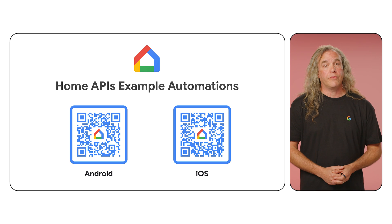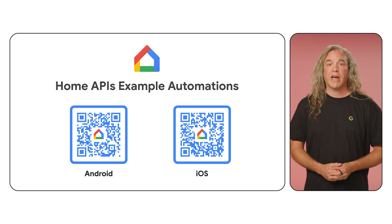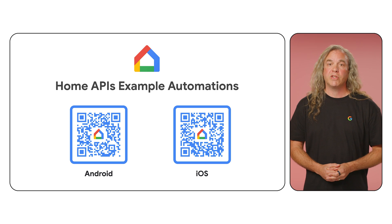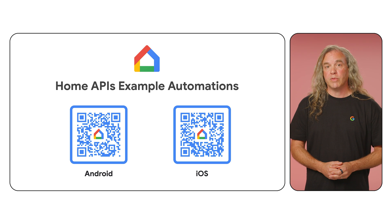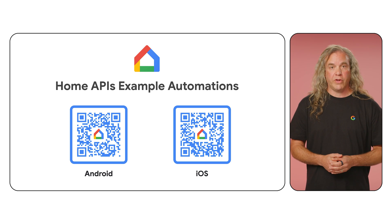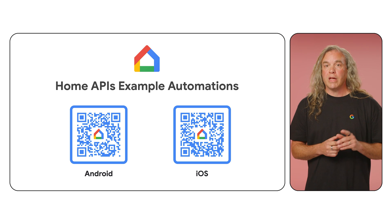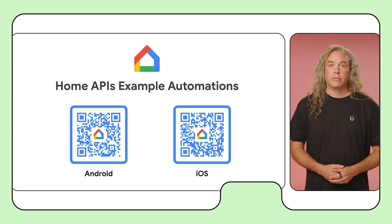And finally, if you need more inspiration, we have a catalog of automation examples on the Developer Center. Use them as starting points for your own automation if you like. This catalog is available on the Example Automations page. Scan the QR codes to view the Android and iOS versions.